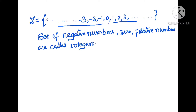We don't know the smallest negative integer — as we go from right to left the value of numbers keeps decreasing. But we can identify the largest negative integer, which is -1. The smallest positive integer is 1, and we cannot decide the largest positive integer. Zero is neither positive nor negative.